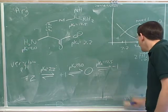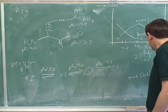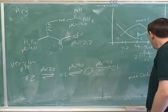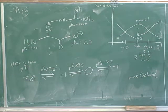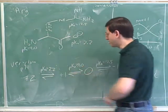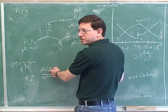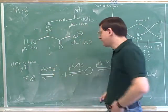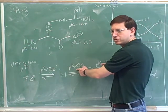Suppose we wanted to get the maximum concentration of the zero charge species. How would we calculate the right pH for that? It would be the average of 9 and 12.5. We get the maximum concentration of this species when we average these two pKa values. And when do we get the maximum concentration of this species? We average these two numbers.